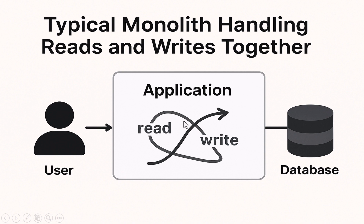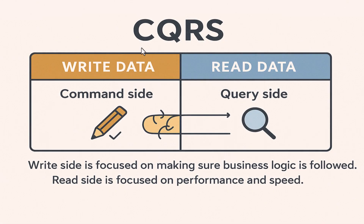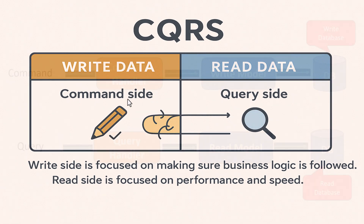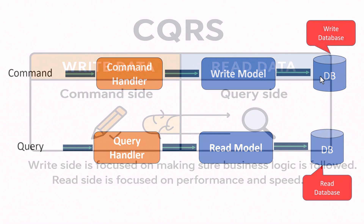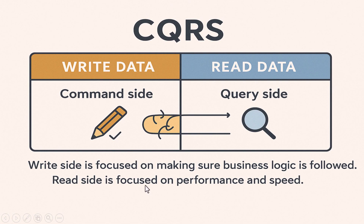This mix makes the code harder to understand and harder to scale. That's where CQRS comes in. CQRS is a simple idea: let's separate the part of our system that writes data from the part that reads data. We have one side called the command side that handles all the changes, like placing orders, adding items to the cart, or updating stock. And we have another side called the query side that only reads data, like showing products, orders, or recommendations. These two sides can use different models, different databases, or even different architectures, because the write side is focused on making sure business logic is followed, while the read side is focused on performance and speed.